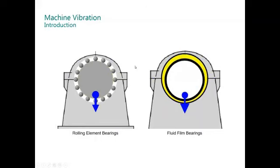In machines, there are two references: machines that have relative motion between the shaft and the machine case, and shafts that don't have relative motion between the shaft and the machine case. With rolling element bearings, there is relative motion. With fluid film bearings, there is no relative motion.